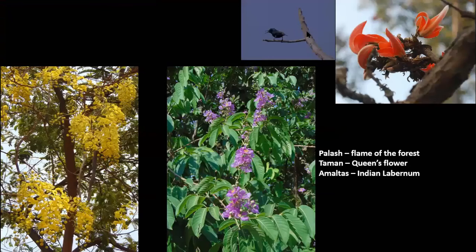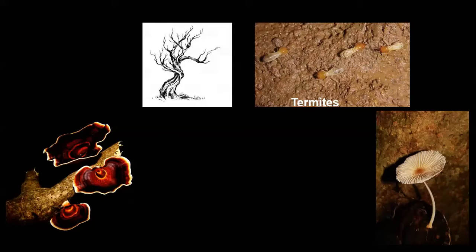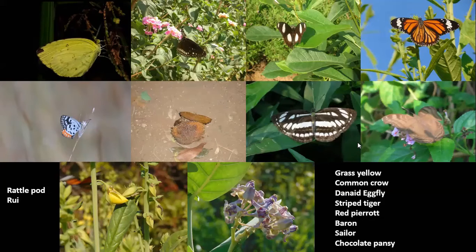This is the flame of the forest — palash — which is the original flame of the forest of our country. You will find birds like sunbirds feeding on them because they give a lot of nectar. Then there is amaltas, the state flower of Maharashtra, and the queen's flower — all attract a lot of insects. When a tree is dead, don't think the biodiversity ends — you will still find termites, other bugs, and beautiful fungi growing on that dead tree. Trees support a lot of diversity even after death.